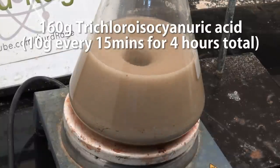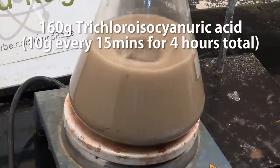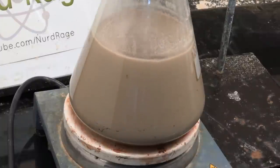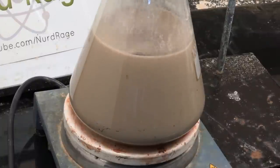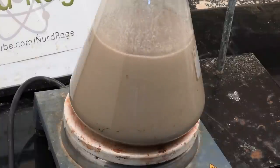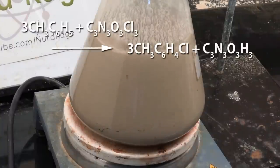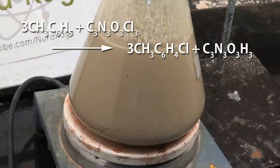Now vigorously stir the reaction mixture and add to it 10g of trichloroisocyanuric acid powder every 15 minutes, for a total of 160g over 4 hours. Between additions take the funnel out and stopper the Claisen adapter so the vapors go into the reflux condenser instead.